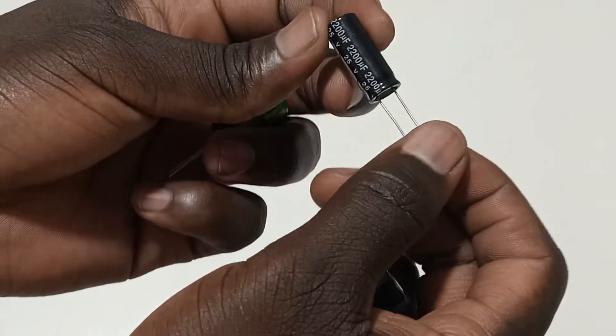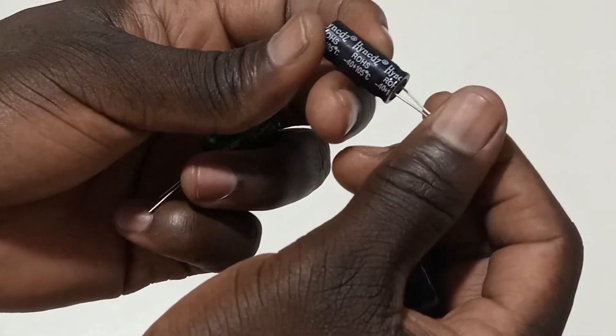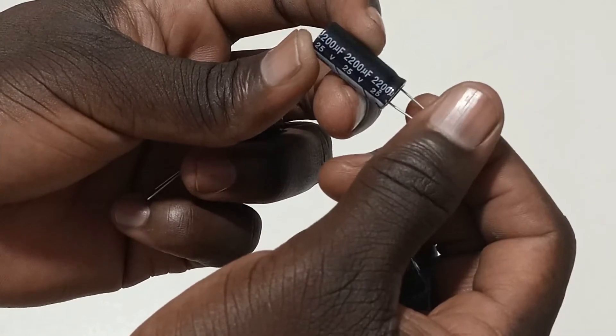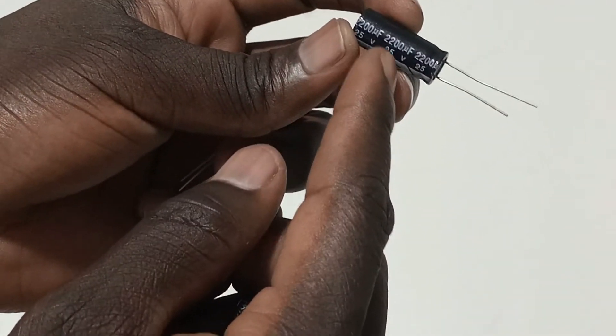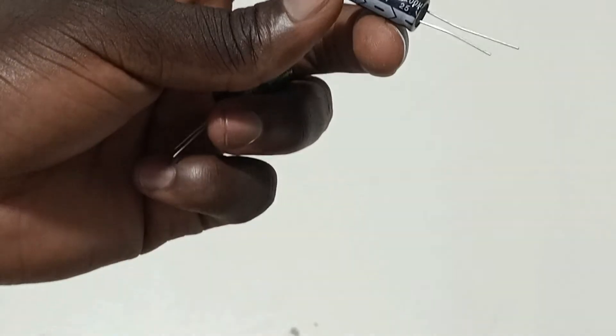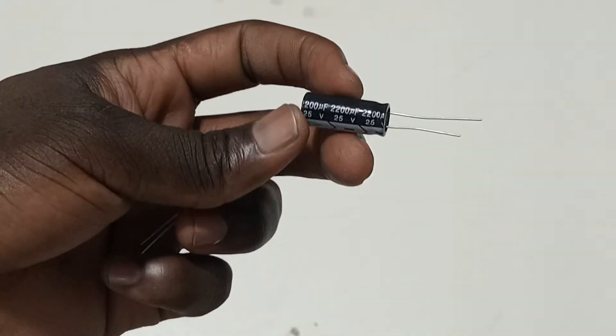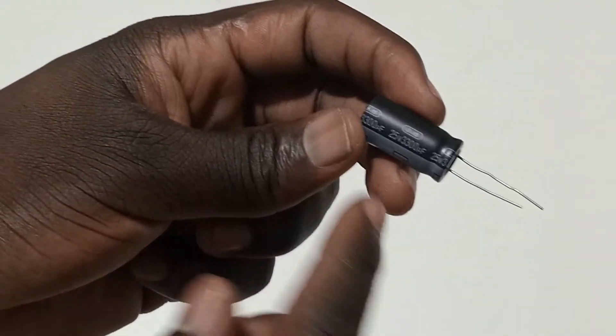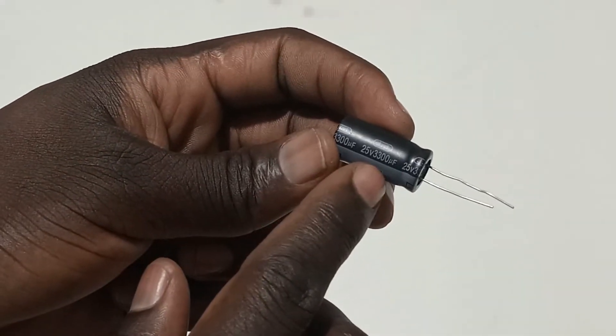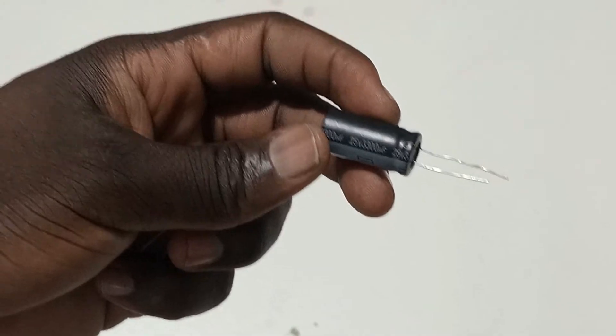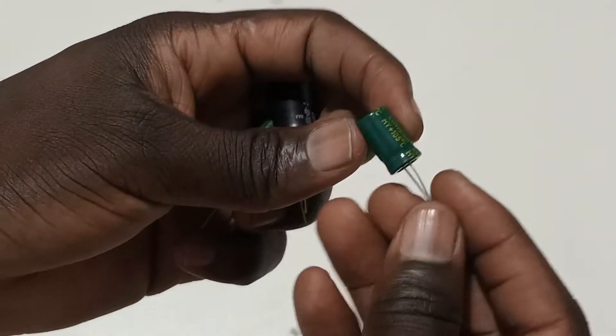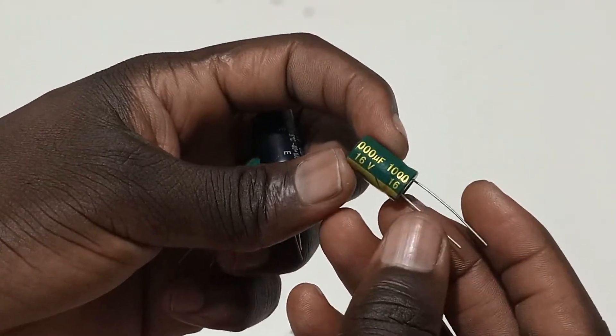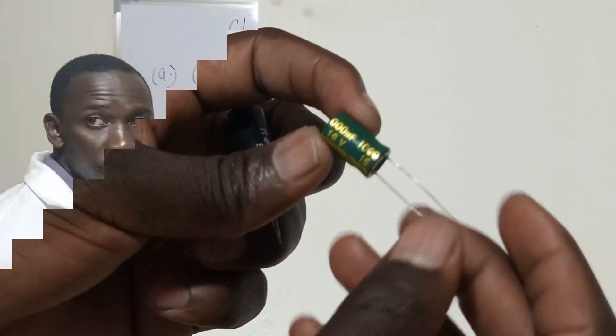Let's see this one here. This is two thousand, two hundred microfarad, the operating voltage here is 25 volts. So, the one that we're going to use for our investigation is this, a thousand microfarad with the operating voltage of 16 volts.